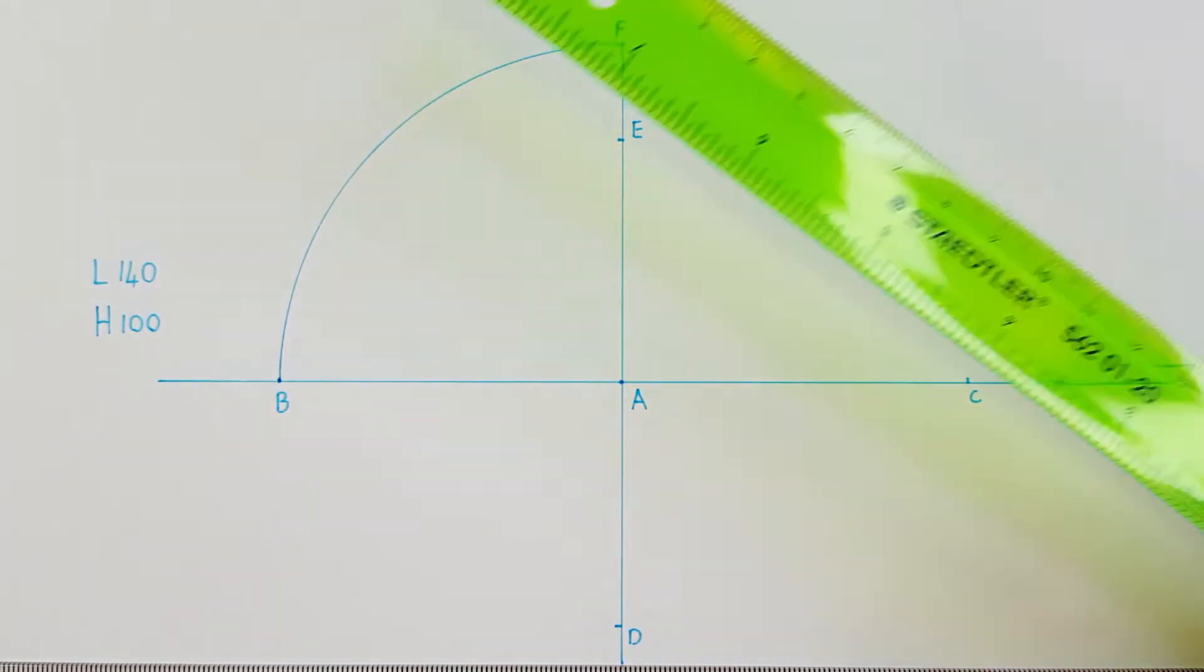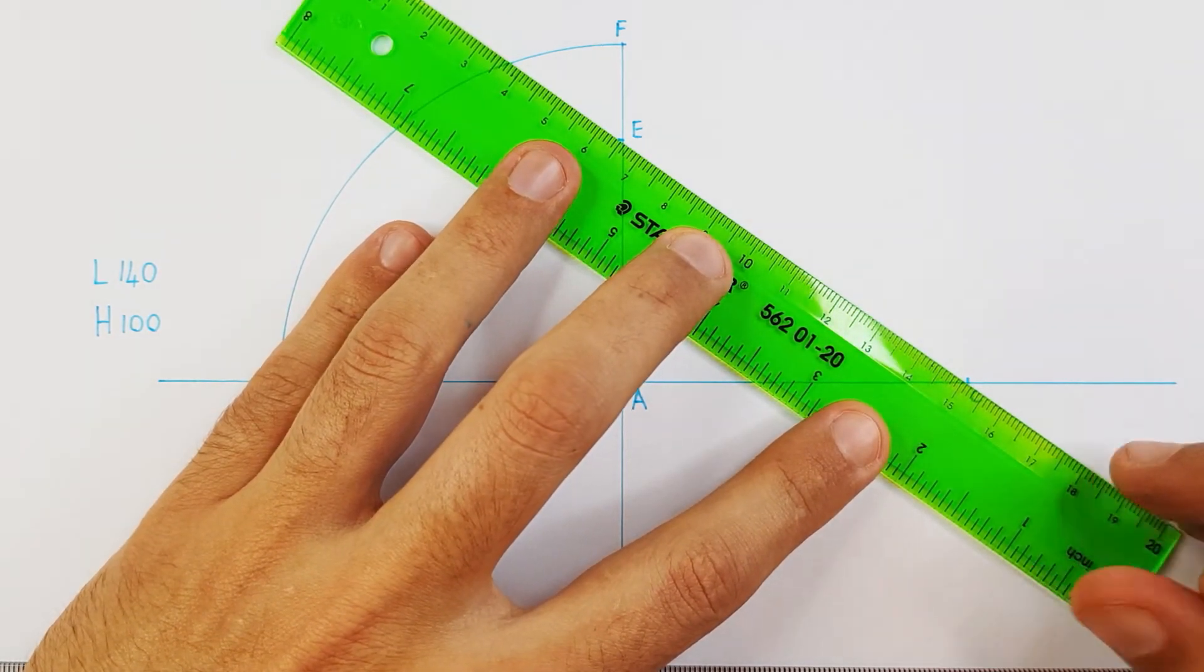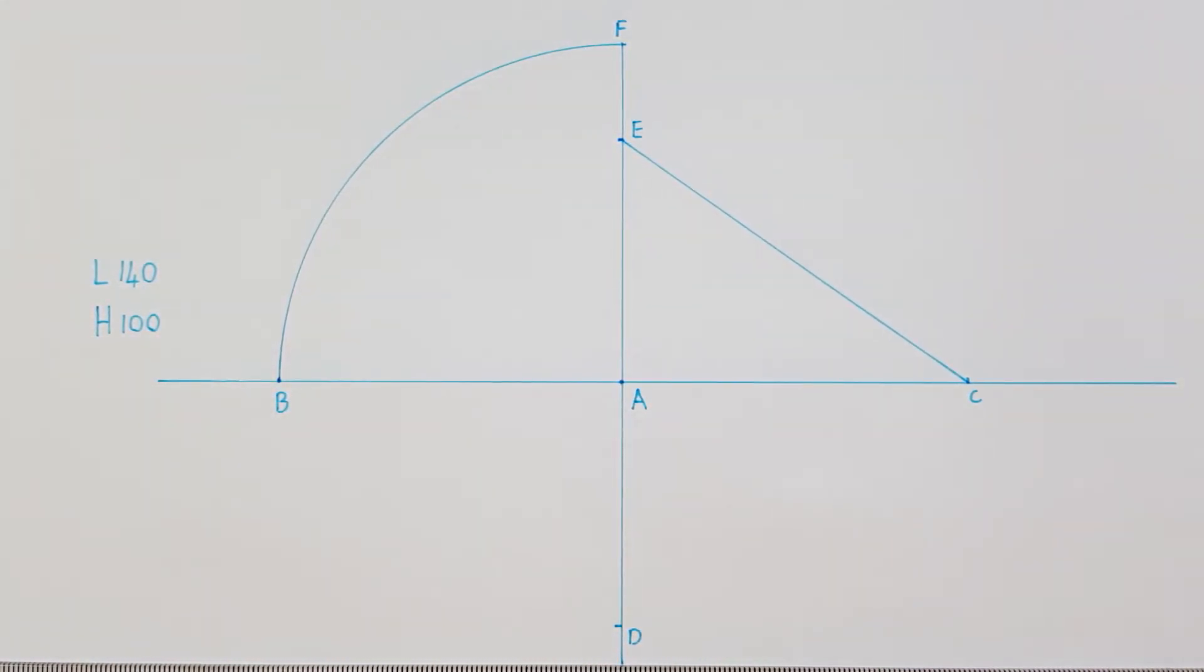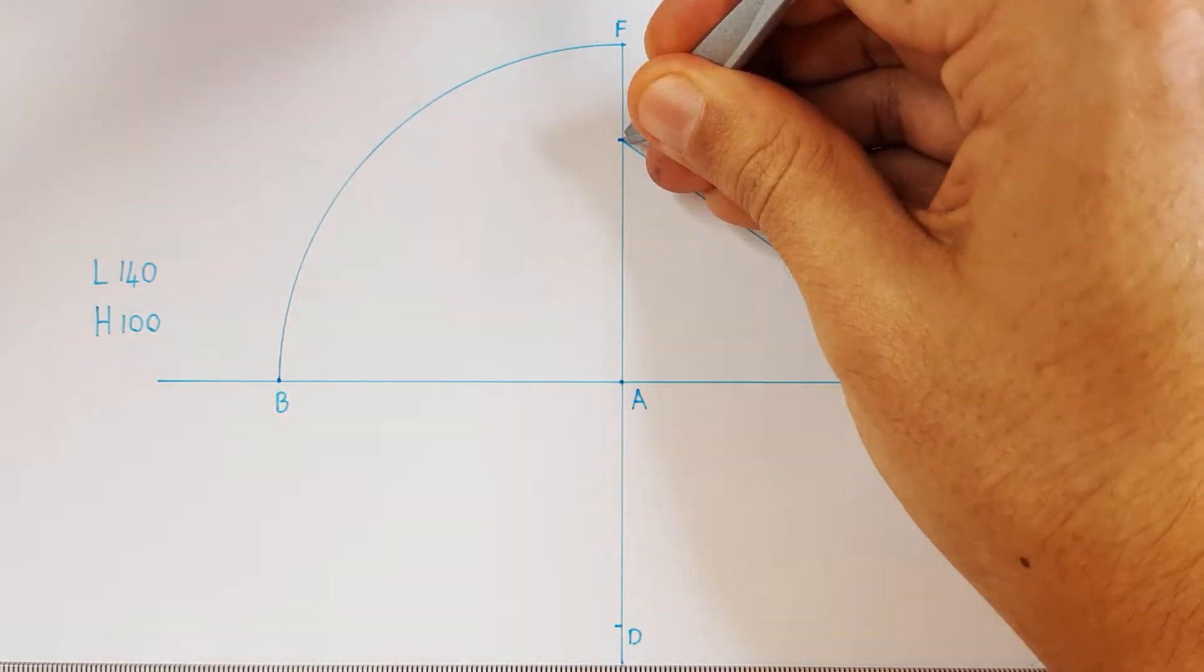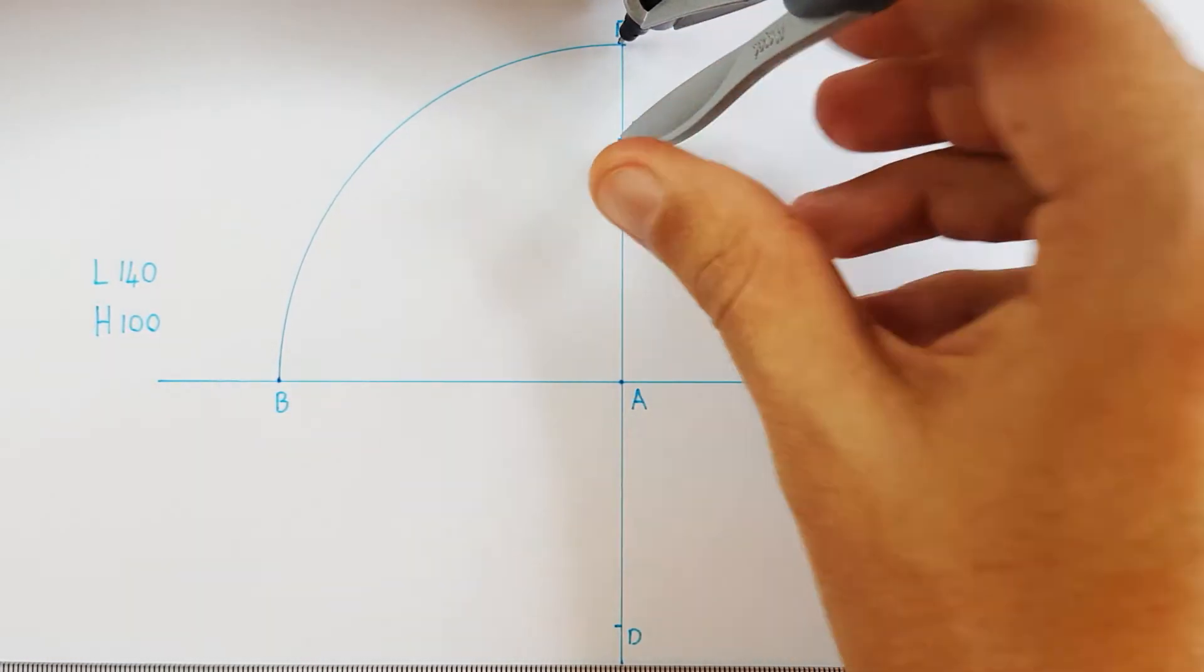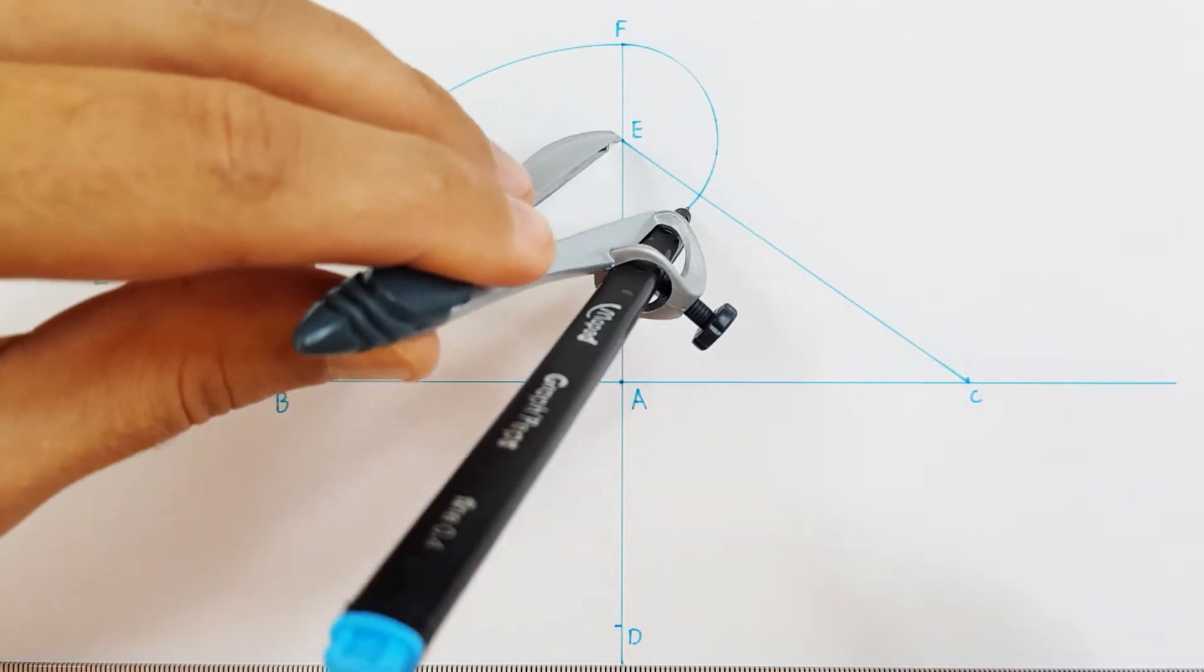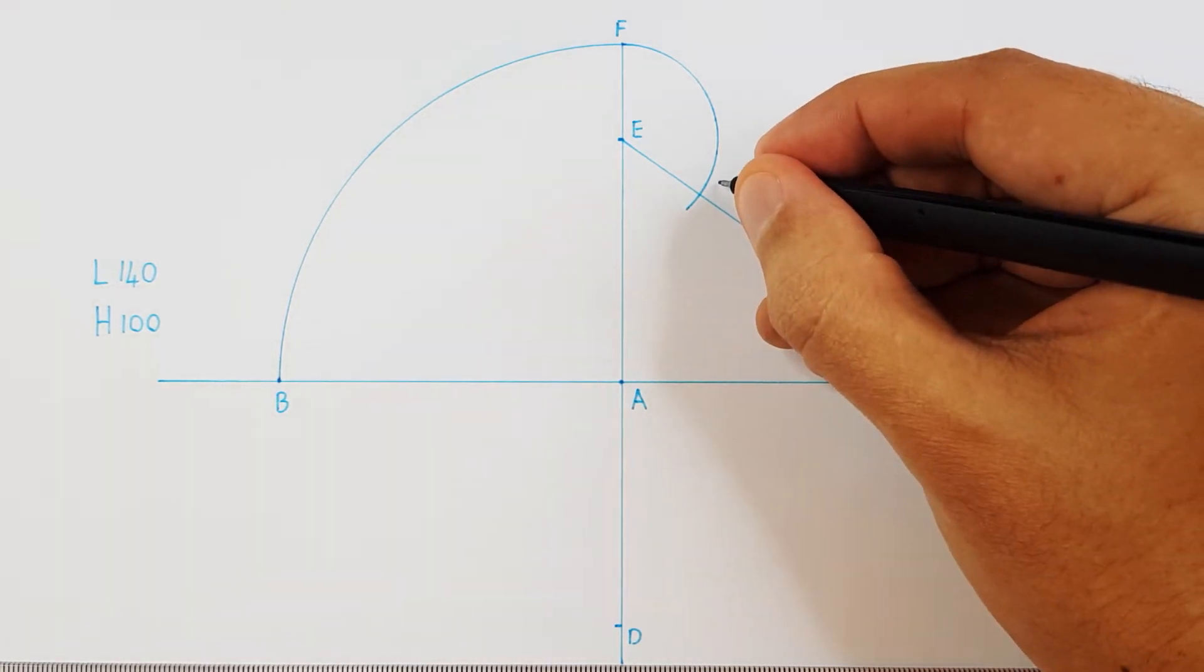Before I continue I need to join point E and C using a straight line. We can then take our compass and put it on point E, adjust your compass to point F, and project point F onto line CE. Label this intersection as point G.